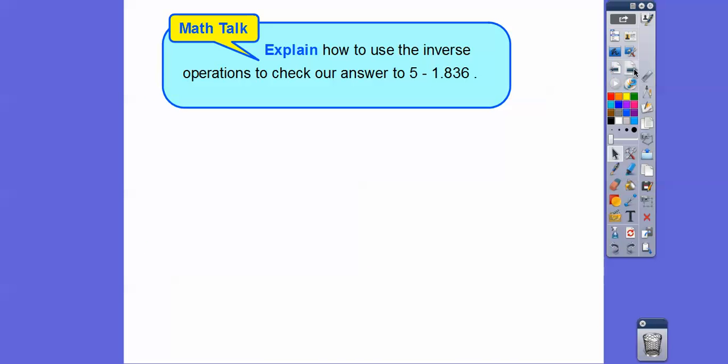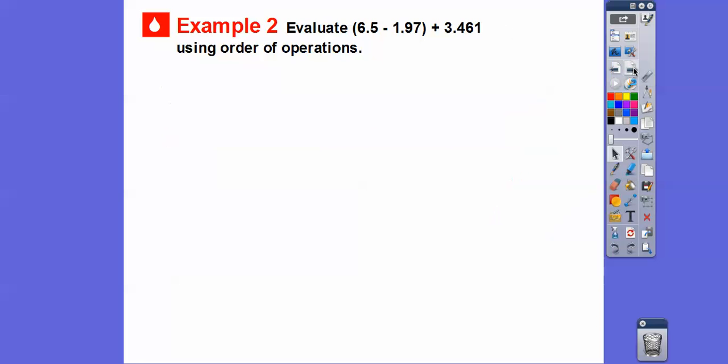So explain how we can use the inverse operation to check our answer of 5 minus 1.836. Well, since we subtracted, then we can add our answer to the number that we subtracted, and it should get us back to the big number, 5. And you can see I did that over here and regrouped all these ones because 4 plus 6 is 10. So I carried the 1. 1 plus 6 is 7 plus 3 is 10, and we end up getting 5.000. So that's how you can check your answer.